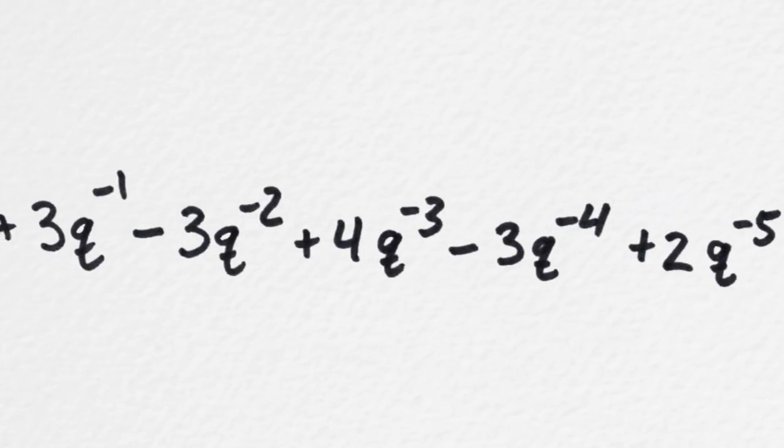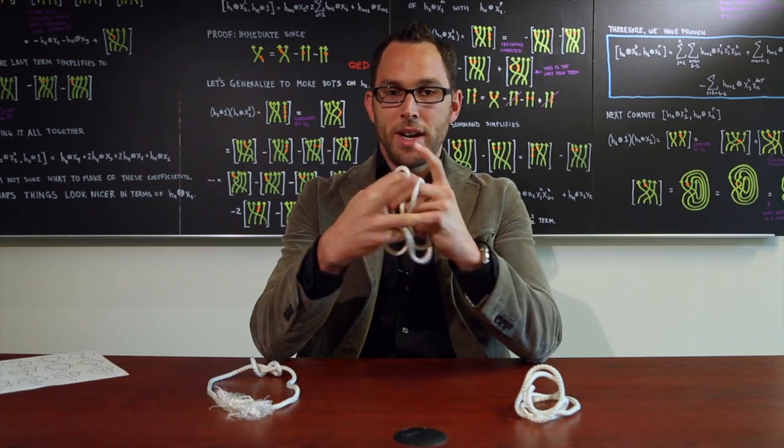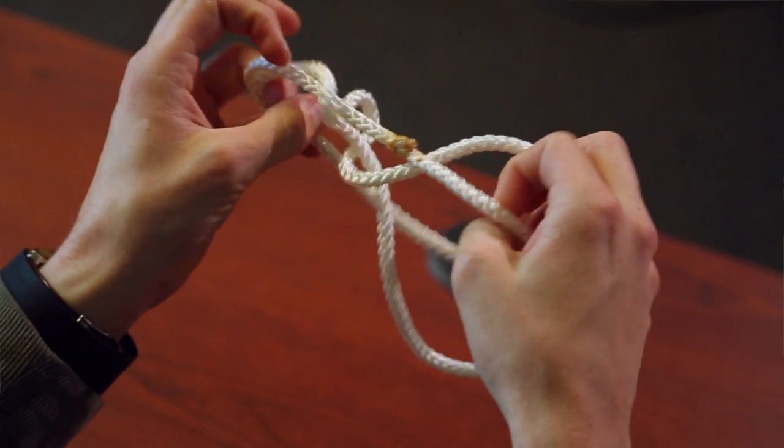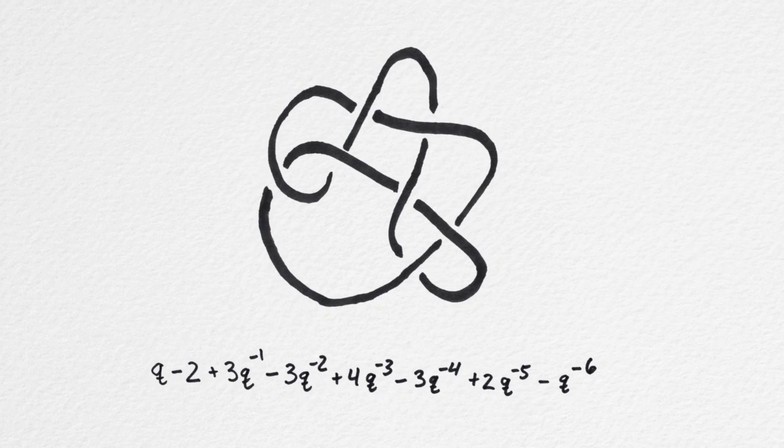So just like a normal polynomial like you see in algebra class, it doesn't matter how I wiggle or move this knot around, the polynomial that I get is always going to be the same.